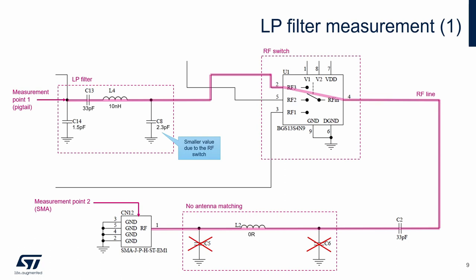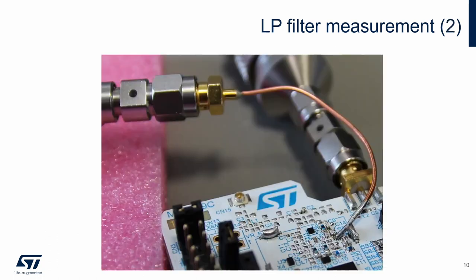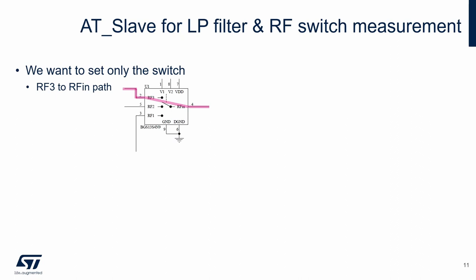Values of the low-pass filter were fine-tuned slightly. C8 was decreased, mainly due to the parasitic capacitance of the RF switch. C14 was decreased as well, mainly due to the impact of the pigtail. The impact of the PCB layout is included as well. Here we can see how the low-pass filter measurement looks in reality. One port of a VNA is connected through the pigtail, and the second port is connected to the SMA connector. To do the measurement we need to set the RF switch correctly — in our case, setting the connection between RF3 and RFIN.